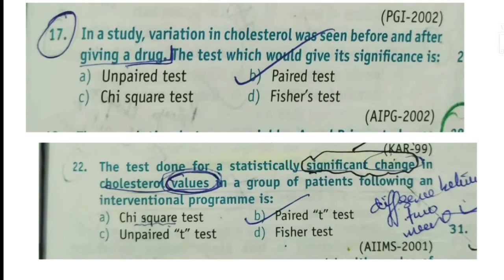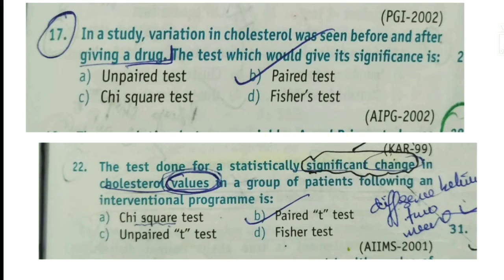Question 22: 'The test done for a statistically significant change in cholesterol values in a group of patients following an interventional program is?' The answer is paired t-test. It cannot be chi-square test because chi-square is a qualitative test and here we have values (quantitative data). It cannot be unpaired t-test because we are observing before and after in just one group of patients — not two separate groups like patients vs. caretakers. So the answer is paired t-test.